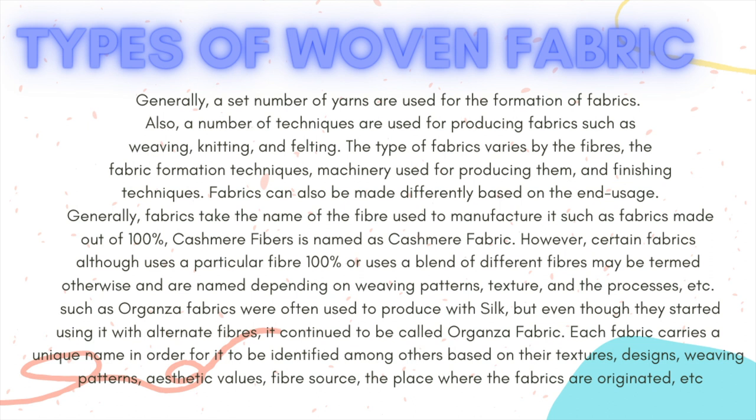Generally, fabrics take the name of the fiber used to manufacture them, such as fabrics made out of 100% cashmere fibers, which is known as cashmere fabric. However, certain fabrics — although they use a particular fiber 100% or use a blend of different fibers — may be termed otherwise and are named depending on weaving patterns, textures, and the processes, etc.